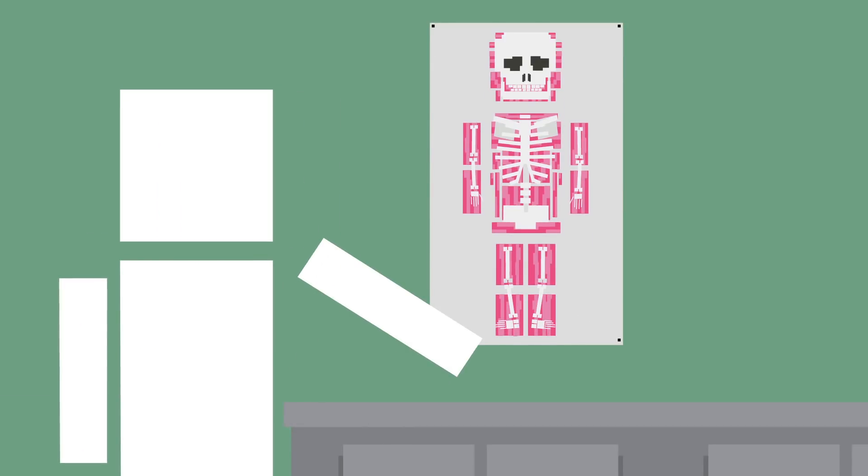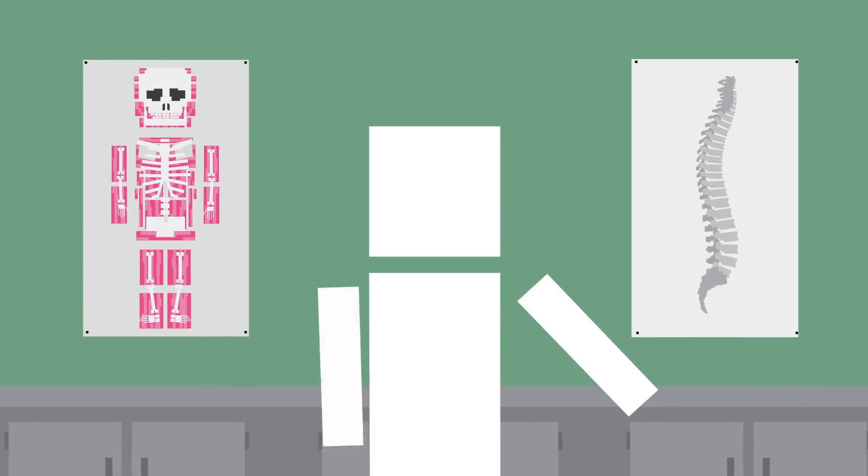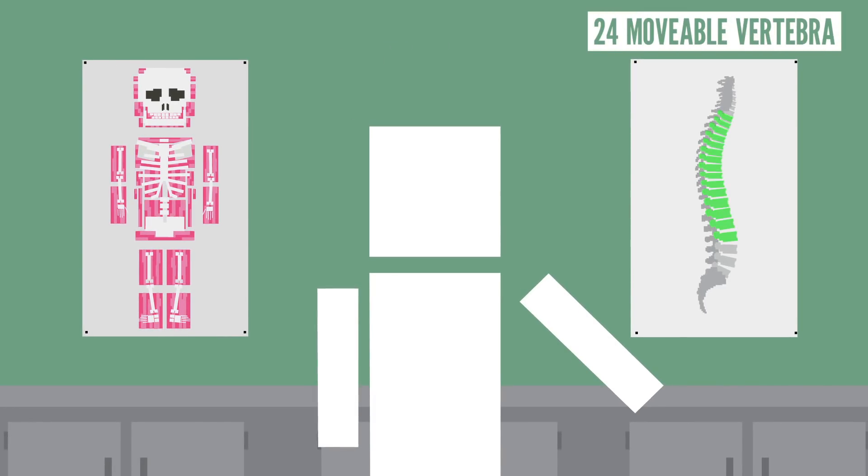Since your muscles are attached to the bones of your skeleton, without them, you simply wouldn't be able to move. Just the spine itself, which is made up of 24 small bones called vertebrae, is necessary if you want to keep yourself upright or even stand at all.